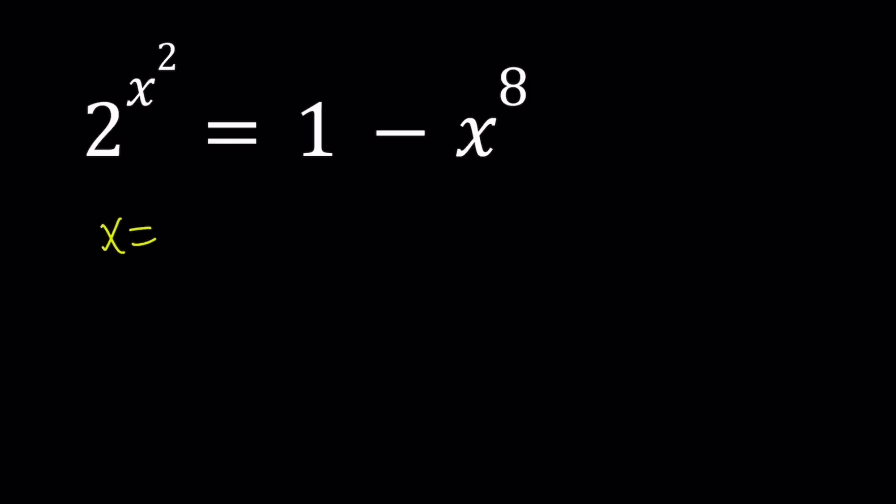So x equals 0 works. Why? Because if you replace x with 0 on the left hand side, you get 2 to the power of 0, which is 1. If you replace x equals 0 on the right hand side, you get 1 minus 0, which is equal to 1. So they check. So x equals 0 is a possible solution.